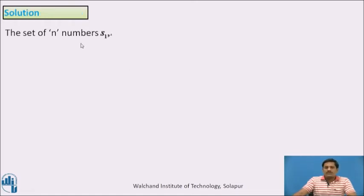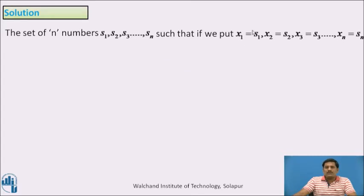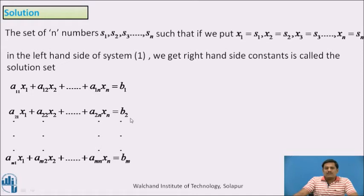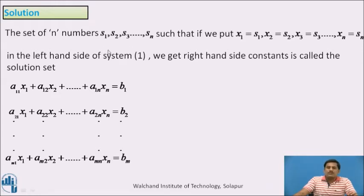Solution: The set of n numbers s1, s2, and so on up to sn, such that if we put x1 = s1, x2 = s2, x3 = s3, and so on, xn = sn in the left-hand side of the system, and we get the right-hand side constants, is called the solution set. If the first equation reduces to b1, the second to b2, and the last to bm, then we say these n numbers form a solution set for the given non-homogeneous linear equations.